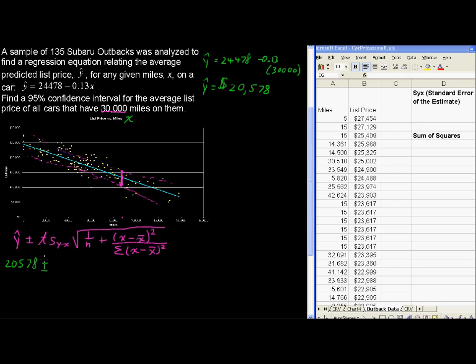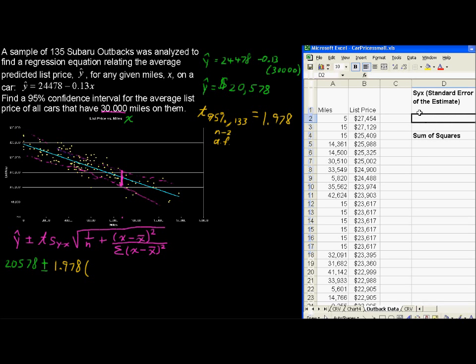From that we have plus or minus, and now I'm going to start plugging a bunch of stuff in. T value for 95% confidence interval and n minus 2 degrees of freedom, that's 133. I'll write this down, n minus 2 degrees of freedom, that t value equals 1.978. So let's plug that in, 1.978, multiplied by the standard error of the estimate. Excel's got a little formula for that.